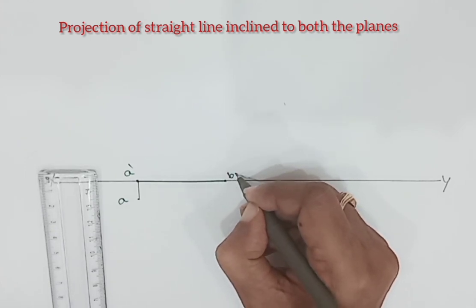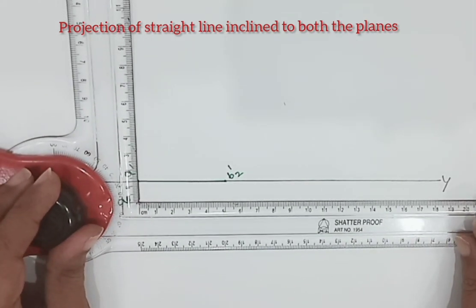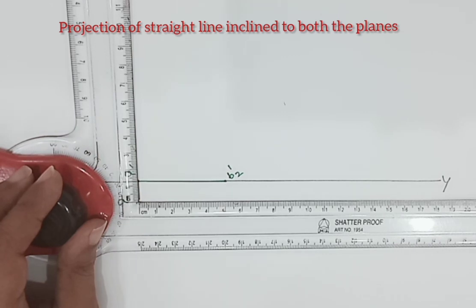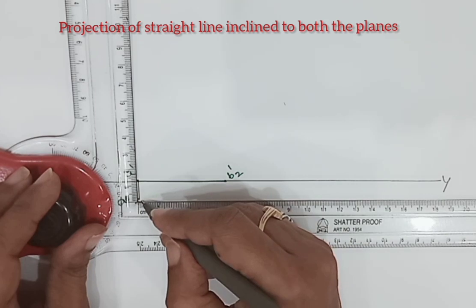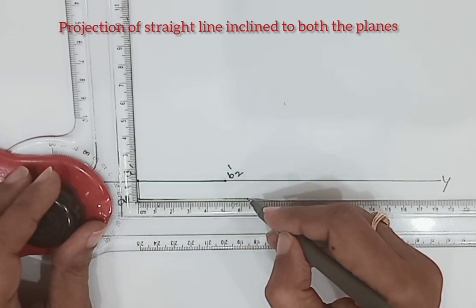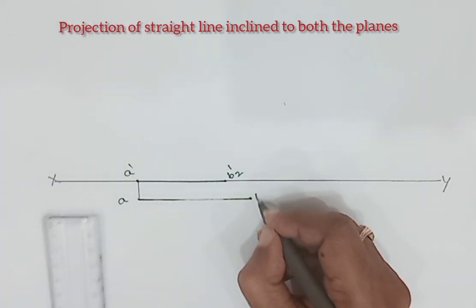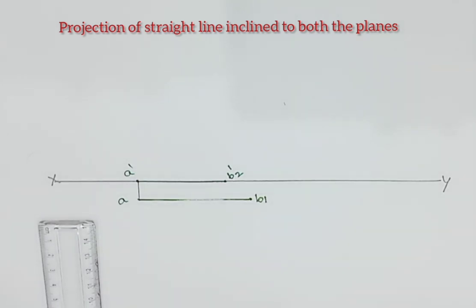Say B2 dash and top view length is 65 mm. And true length is also given as 75 mm. Then we know for every true length there is a related reduced length. Then this is the reduced length in the front view. So for that we have to draw the true length in the top view.